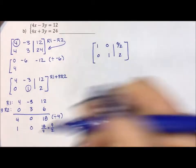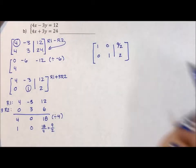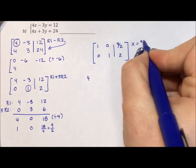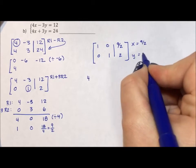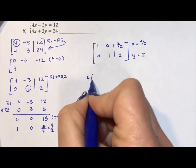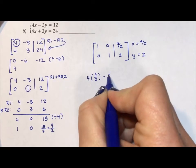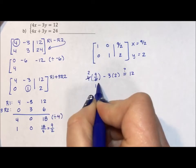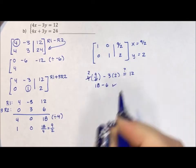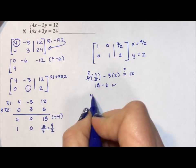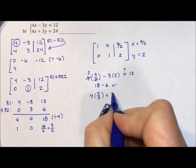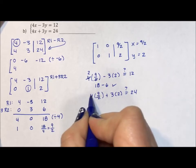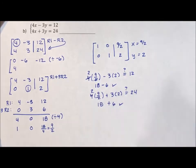I want to check. I could have done something wrong with all those numbers. This translates to x equaling 9 halves and y equaling 2. Is 4 times 9 halves minus 3 times 2 really equal to 12? 18 minus 6. That works. Is 4 times 9 halves plus 3 times 2 really equal to 24? This is still 18, this is still 6. And this still works.